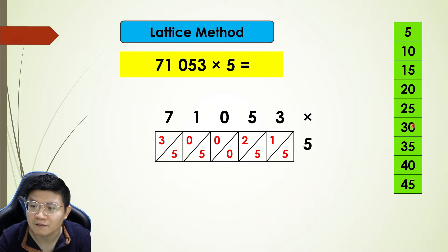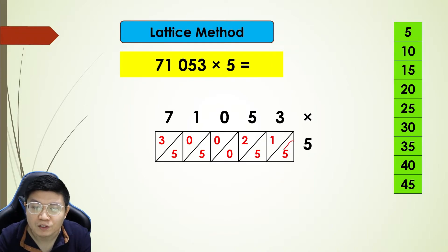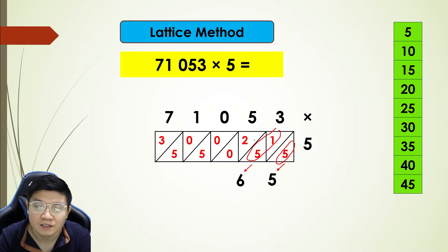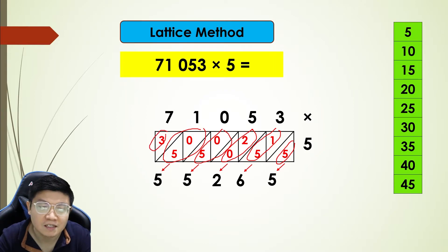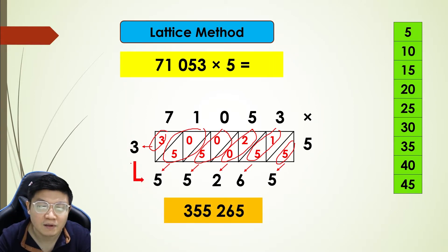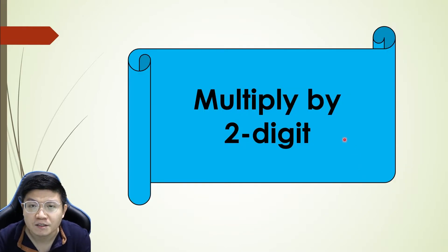Five times seven — one, two, three, four, five, six, seven — which is 35. After inserting all the times table values in the blocks, it is time to do the lattice method. For the first one, bring it down and write five. These two numbers we add together: one plus five which is six. Then the next pair gives two, then five, then five. Lastly this three becomes three. We read the number from here to the end: 3, 5, 5, 2, 6, 5. That is your answer using the lattice method.